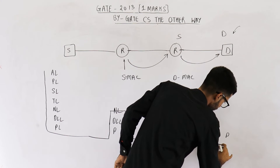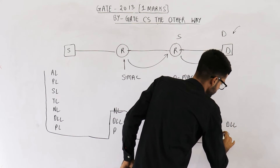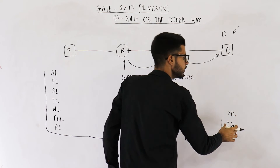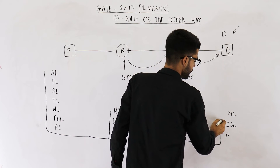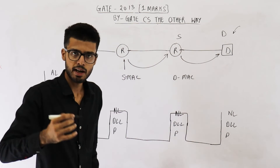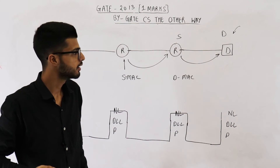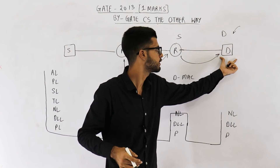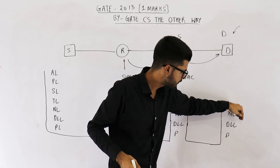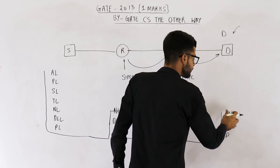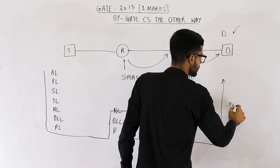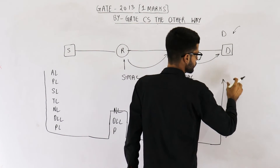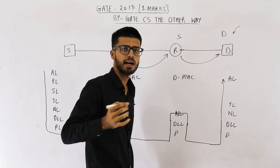Physical layer of destination D gives the frame to data link layer. Data link layer gives the packet to network layer — the packet is removed from the frame. Network layer analyzes this packet and realizes that this packet is for this machine only. It need not be forwarded anywhere else. So instead of giving it back to data link layer, network layer gives it to the upper layers — transport layer, then session layer, presentation layer — and eventually it reaches the application layer.